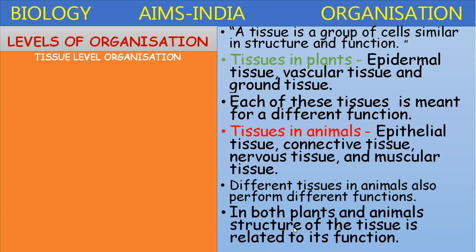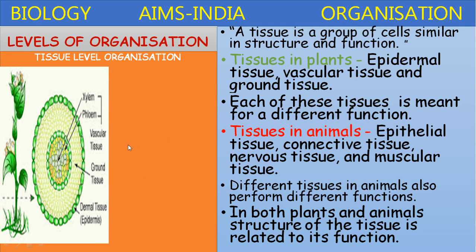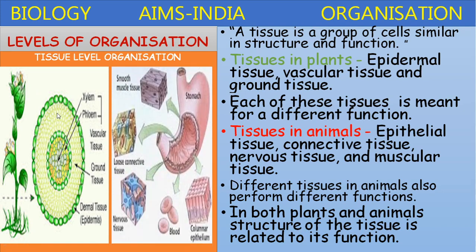In both plants and animals, the structure of the tissue is related to its function. In plants, the tissues are broadly classified into three major types: dermal tissue, mainly for protection; ground tissue, for conduction; and vascular tissue, which includes xylem and phloem, which helps in conduction. The animal tissues are epithelial tissue, connective tissue, muscular tissue, and nervous tissue.